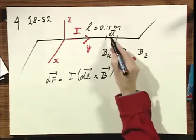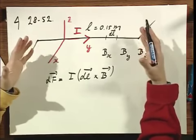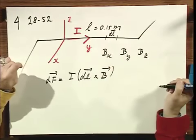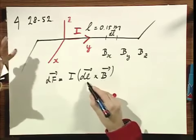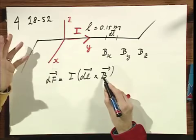But since here dl and B always make the same angle with each other, the wire is not snaking through space, and B is uniform. There is a sine theta which is a constant. It's not one, it's not minus one, but it is a constant.